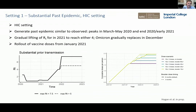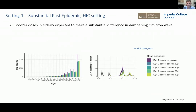Looking at that first question — substantial past transmission — we used this model to simulate different transmission trajectories and rolled out vaccine doses and boosters to different age groups. Booster doses in the elderly are making quite a substantial difference in dampening what we've simulated as an Omicron-type wave.